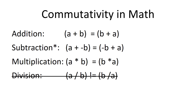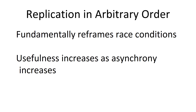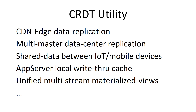You don't worry about who comes first, except for division, which is not commutative. And once you have this very unique property, your race conditions in a distributed environment are just completely different. So this type of replication is really useful — the more distributed you get or the more asynchronous you get. And there are a lot of use cases and architectures where CRDTs are helpful.